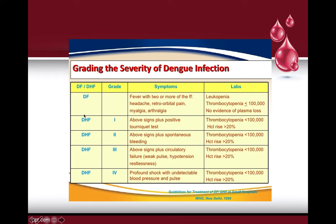We distinguish dengue fever from dengue hemorrhagic fever: dengue fever is diagnosed when there is fever with two or more of the following — leukopenia (low WBC count) or thrombocytopenia (low platelet count) — but with no evidence of plasma loss. Once there is evidence of plasma leakage and more serious symptoms, it is graded as DHF.